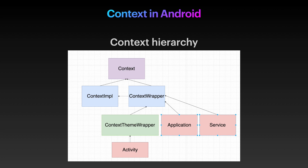ContextWrapper has an attachBaseContext function whose behavior ensures the context is attached only once. Moving into the third level: ContextThemeWrapper, which, as its name implies, applies the theme from the application or activity — the one we define as Android theme in the manifest XML file. Since both Application and Service do not need a theme, as there is no UI, they inherit directly from ContextWrapper. When a new activity, application, or service is initiated, a new context implementation object is created each time. So the different contexts start making sense — the basic difference is whether they expose a theme or not.